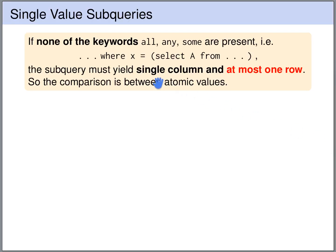So we are allowed to write comparisons like x equals some subquery if it is guaranteed that the subquery returns a single value, so a single column and a single row.